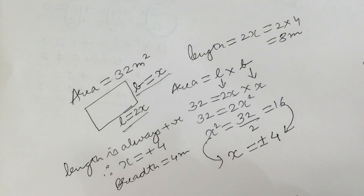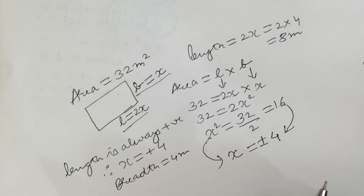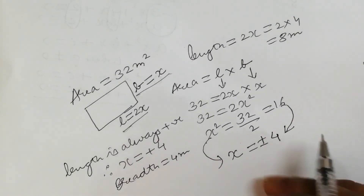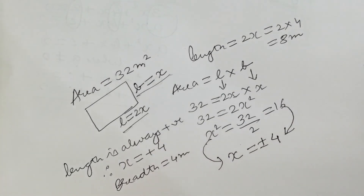Similarly, we can use quadratic equations in speed-distance-time problems for finding the speeds of objects, or finding the distance, or finding the time duration required for an object to travel from place A to place B. In the next video, we will start exercise 4.1. Thank you.